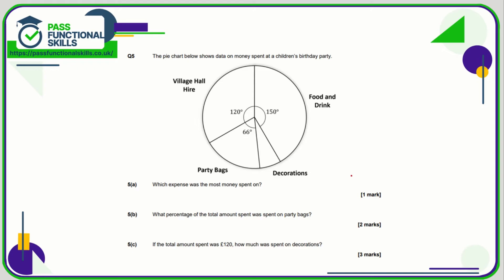Question number five: which expense was the most money spent on? The biggest angle is 150 degrees, so that is food and drink. What percentage of the total was spent on party bags? That's 66 degrees out of 360. To convert to a percentage: 66 divided by 360 multiplied by 100 gives 18.3 recurring percent, so approximately 18.3 percent.